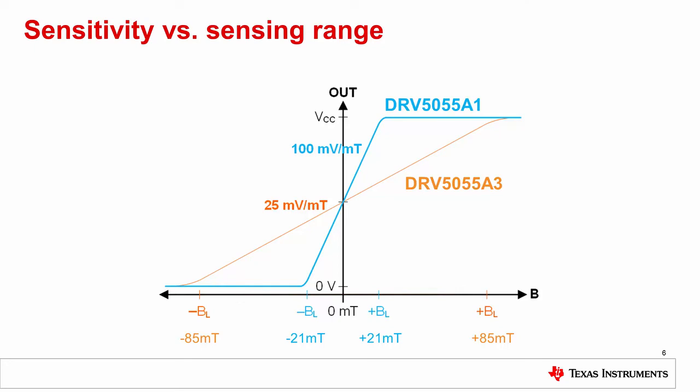For a given application, the system designer should select the highest sensitivity option that can measure the required range. This will allow them to get maximum voltage output per mT measured.